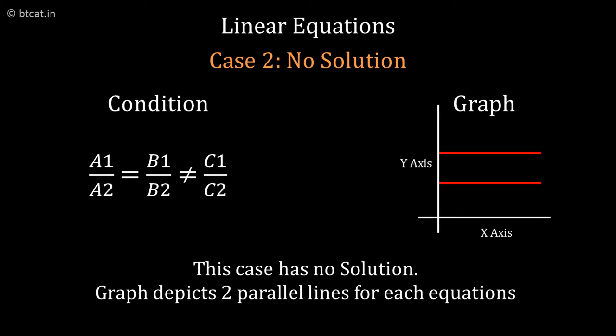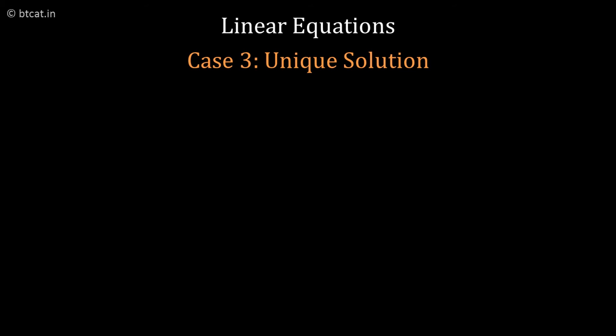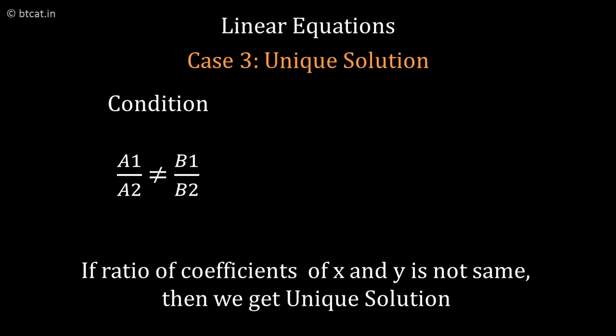The third case is the unique solution, which is what we are interested in. That condition is A1 upon A2 is not equal to B1 upon B2. In other words, the coefficient of x and the coefficient of y should not be in the same proportion. That is the check for the solution of linear equations in two variables.